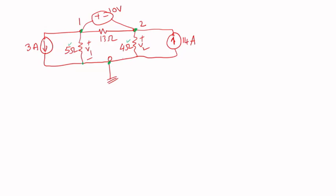But from node 1 to 2, they're connected through a source. So we call that a super node, where two nodes are connected through a source. So that's a super node.